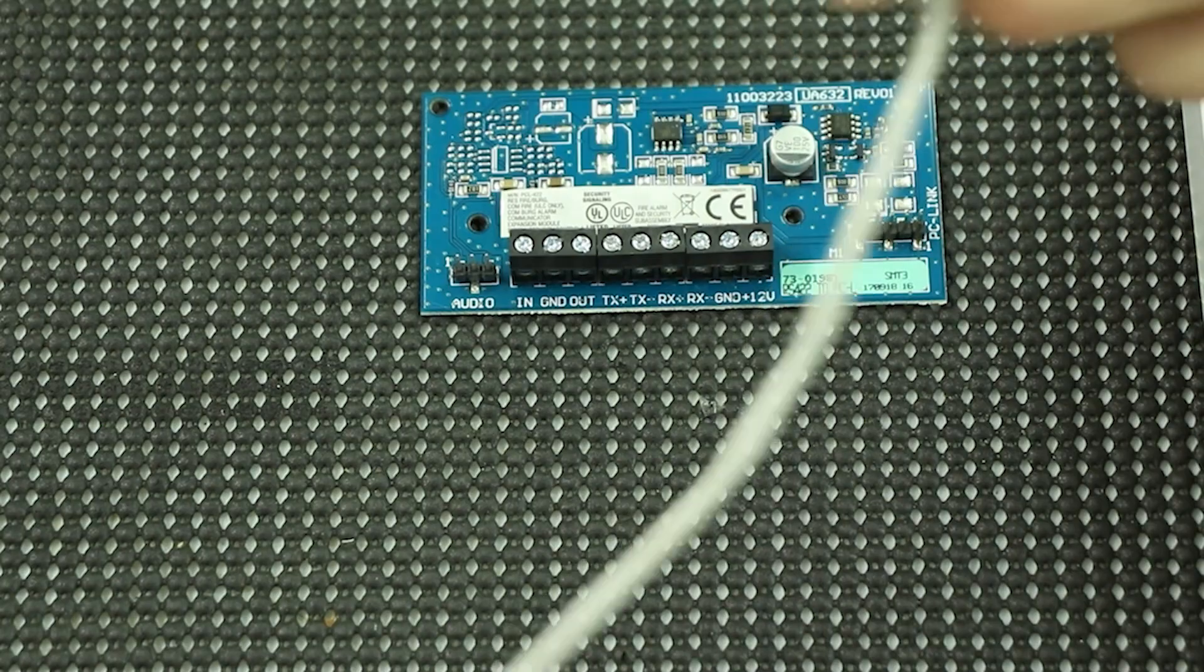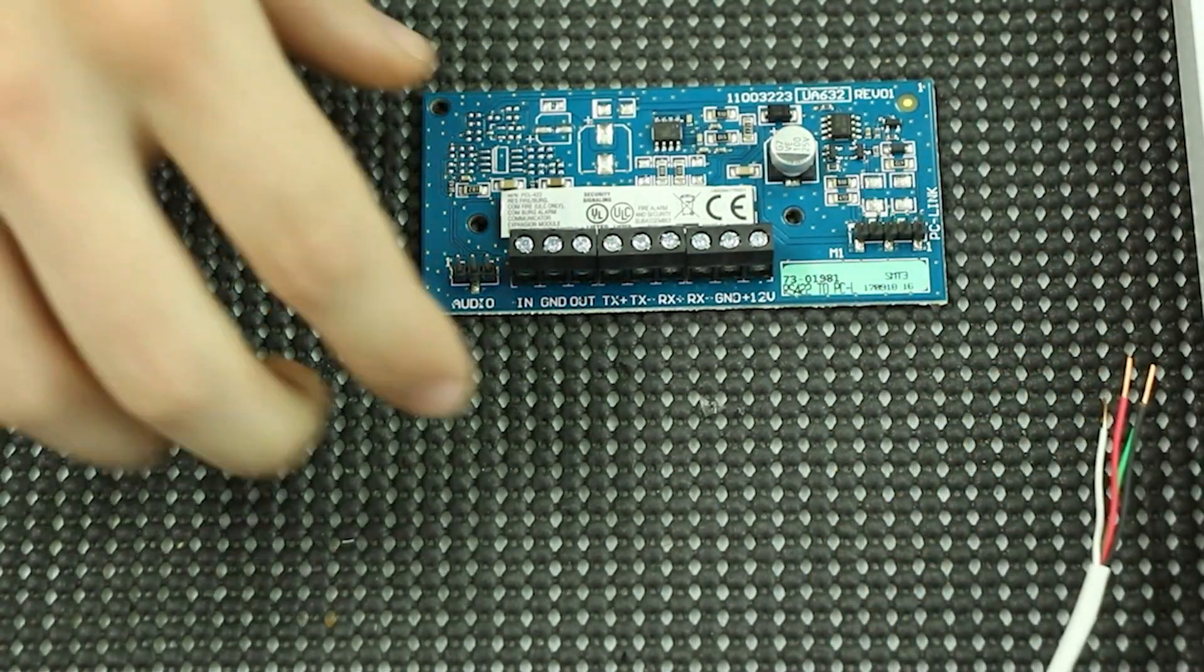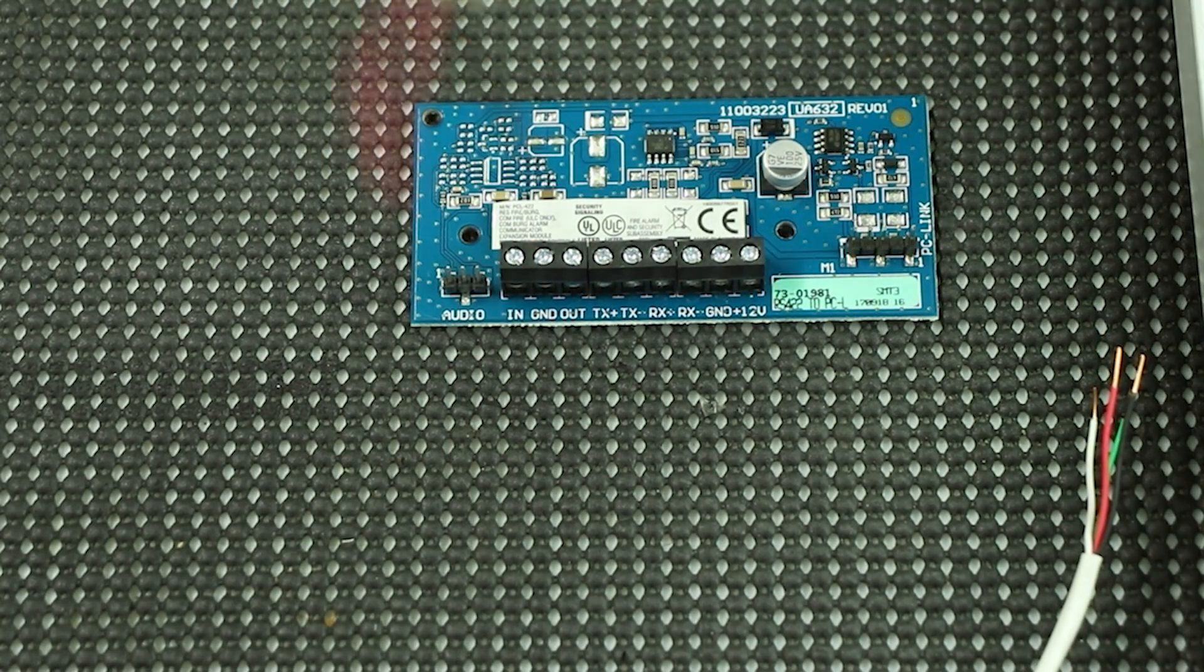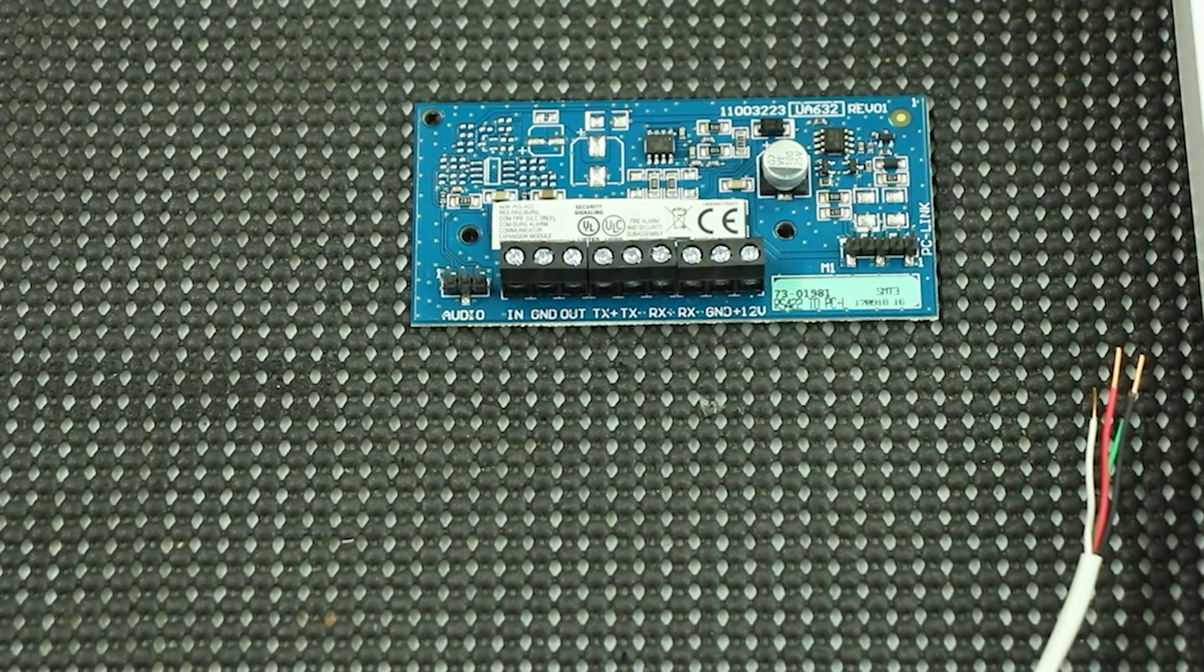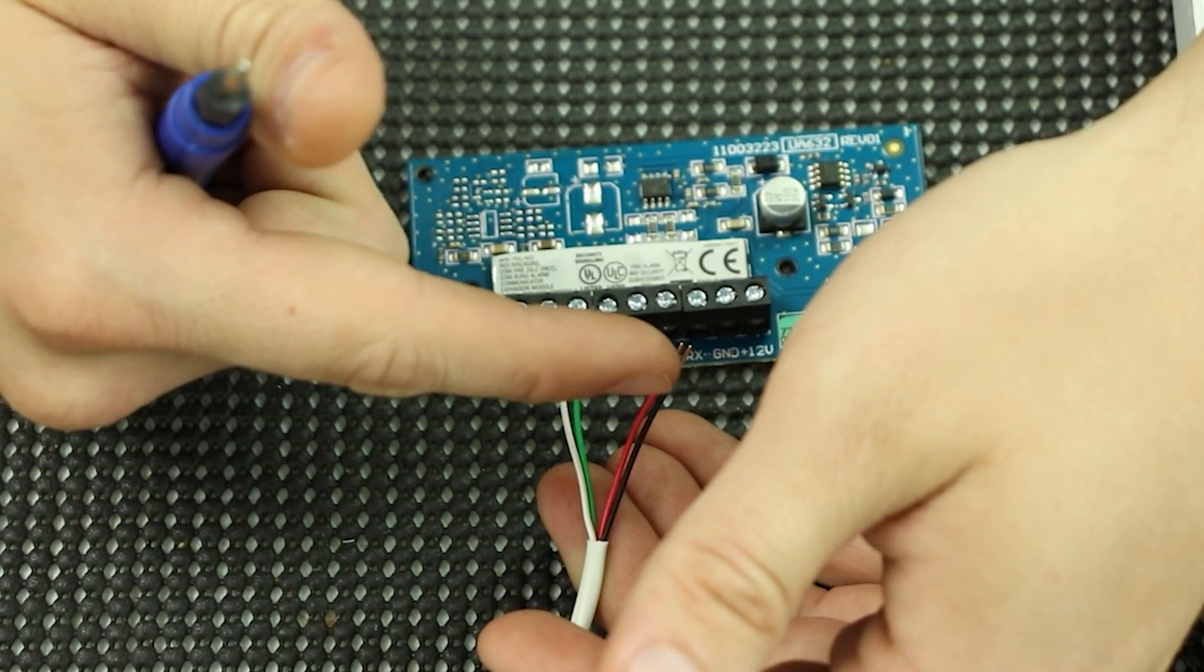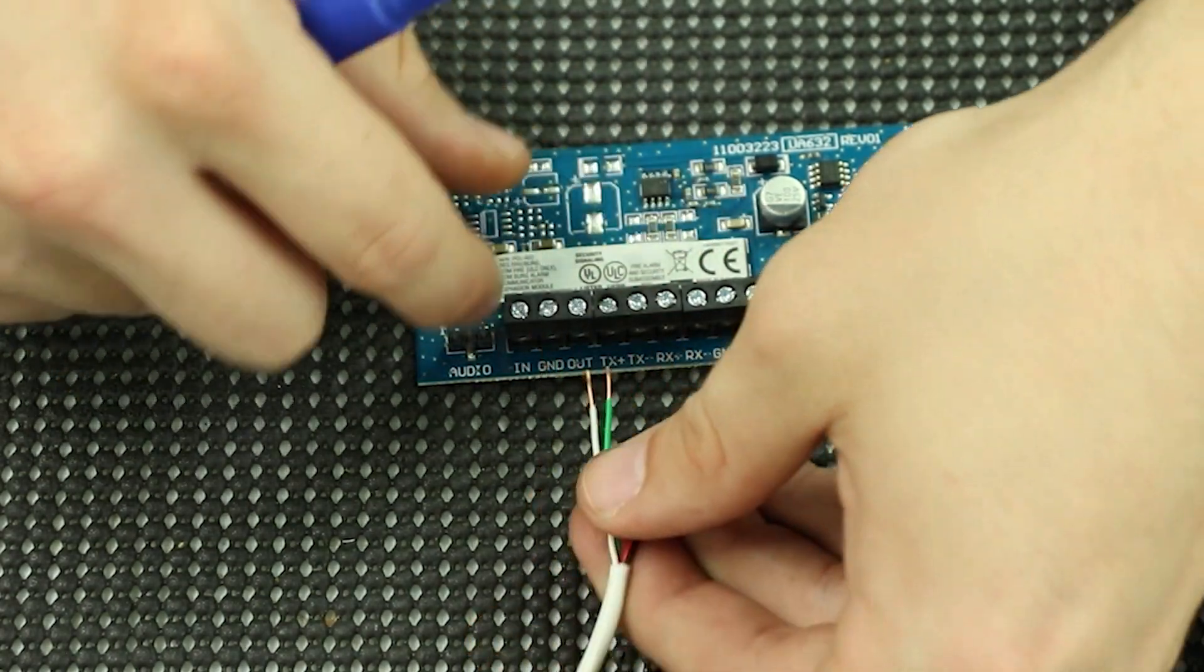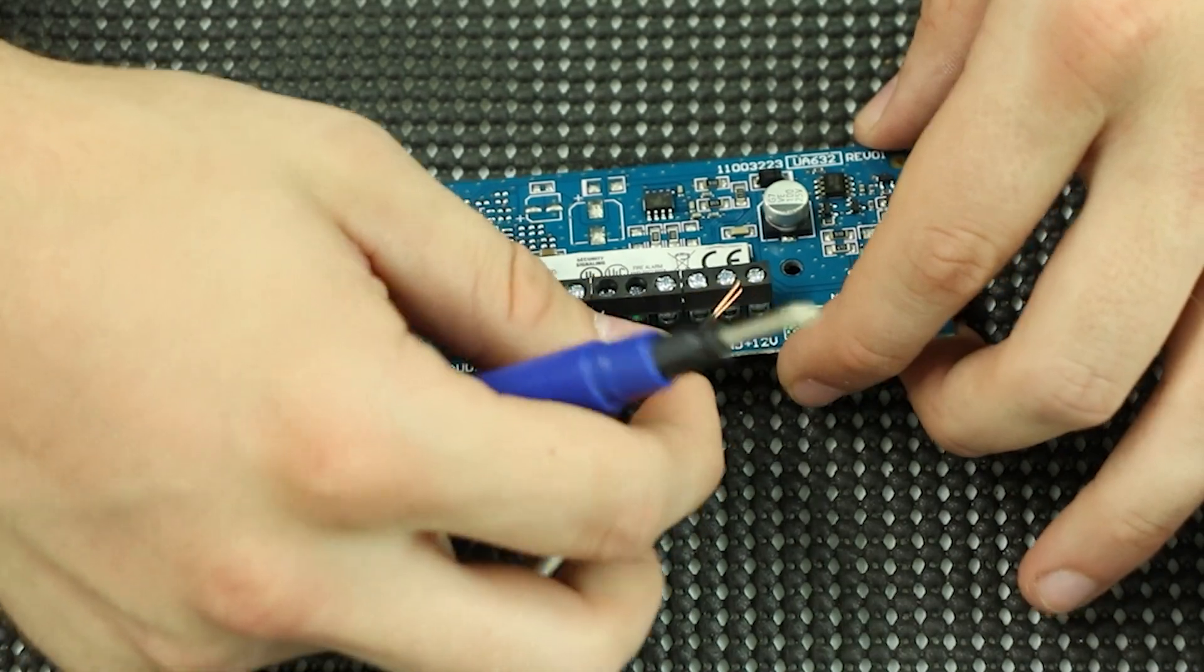I got one four-wire cable and that is going to be for the TX and RX terminals. Then I got a two-wire, it's technically four-wire but just using the red and black from that one, and that's what we're going to use for power. On this we are going to be using the yellow and green, white and green for TX, and the red and black for RX. We're going to use a red on RX positive and black on RX negative.